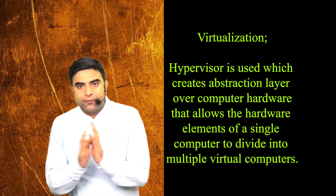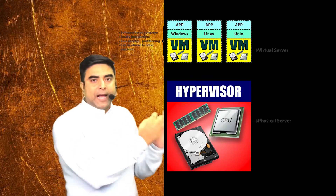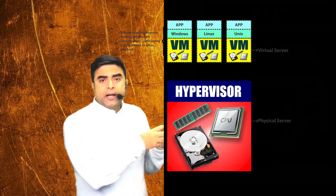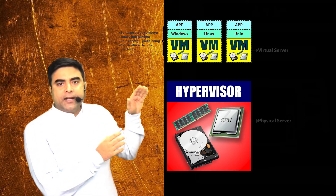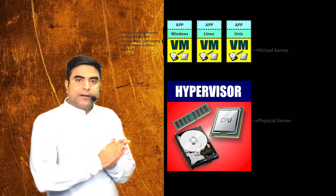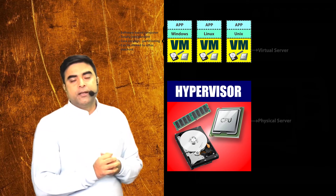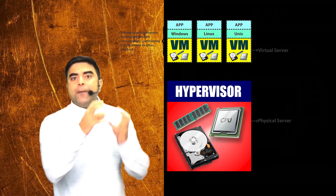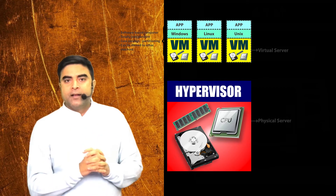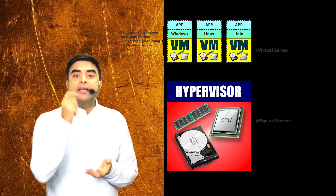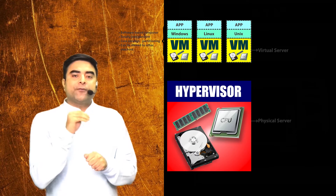We have one computer with RAM, hard disk, network, and processors. On that physical server, the hypervisor helps divide all these resources into multiple virtual machines. Each virtual machine is fully functional — it has CPU, RAM, and hard disk allocation. On each virtual machine, we can install instances of an operating system and run applications.